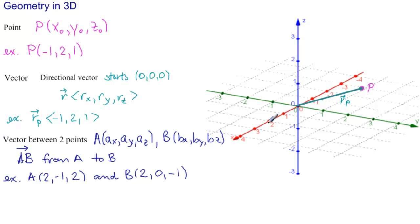So 2 on the x-axis, minus 1 on the y-axis, and 2 on the z-axis. So this is A, 2, minus 1, 2. And then B is 2 on the x, 0 on the y, and minus 1 on the z. So this is B, 2, 0, minus 1. And the vector AB starts at A and ends at B. So this would be the vector AB.